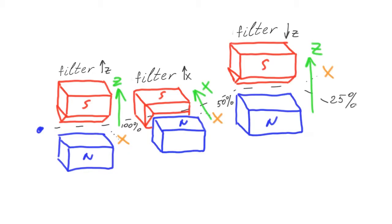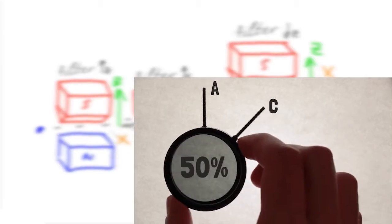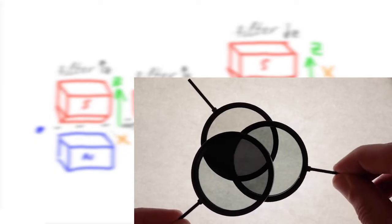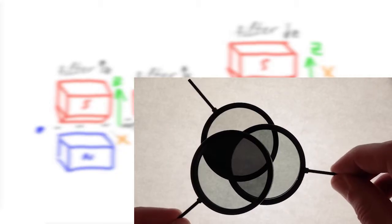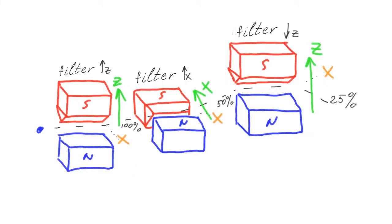You can use photons instead of electrons and polarizers instead of Stern-Gerlach devices to see this strange quantum effect at home, because the polarization of a photon plays the same role as the spin of an electron. This behavior can only be explained by assuming that after passing through the second filter, an electron forgets that its spin has ever been directed up along the z-axis. The measurement of spin along the x-axis makes irrelevant previous information about its value relative to the z-axis.